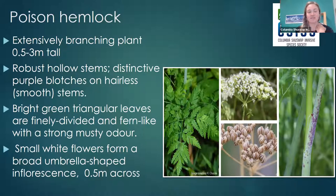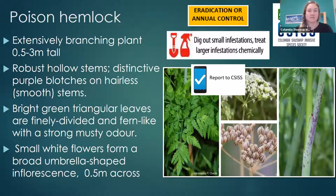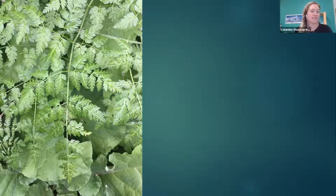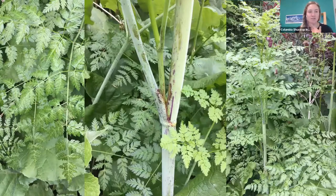All parts of poison hemlock are extremely toxic to humans and animals. It can cause serious illness and can be fatal if consumed — you don't even want to touch it with bare skin. These plants can cause adverse skin reactions, so it's really important to use caution when working around them. The leaves are highly branched and fern-like with a really bright green color, and the stems have those distinctive purple blotches and are hairless, smooth, and hollow.